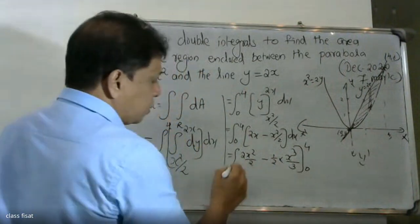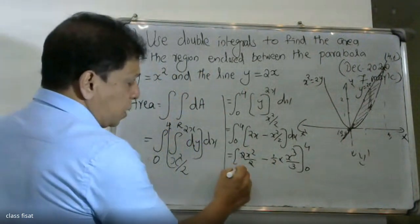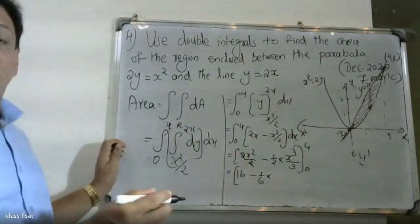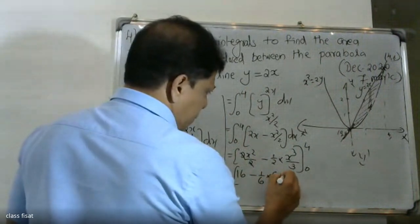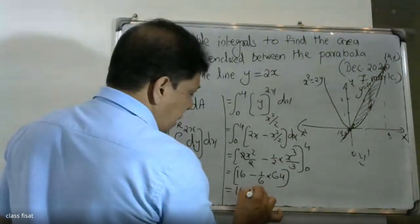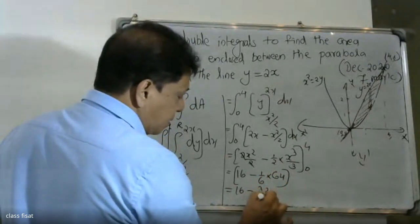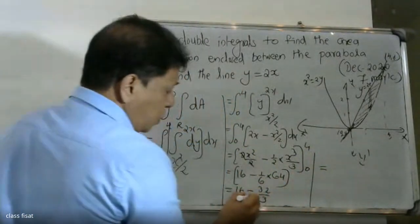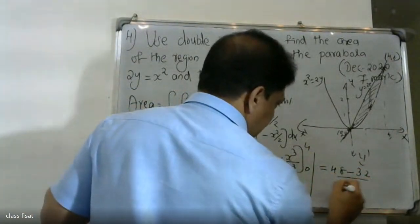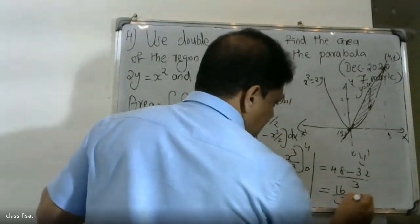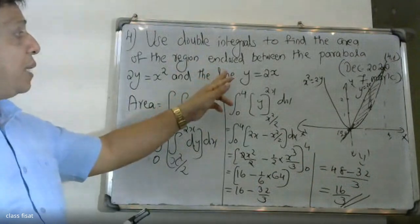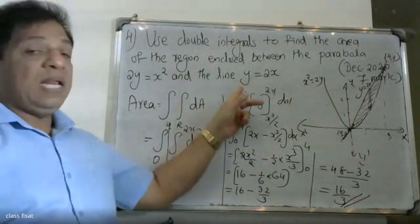Evaluating: we get 2x minus x²/2 integrated from 0 to 4. That gives x² minus x³/6 from 0 to 4. Substituting x = 4: 16 minus (1/6)(64) = 16 minus 64/6 = 16 minus 32/3. Cross multiplying: (48 minus 32) divided by 3 = 16/3. The area enclosed between the parabola and the line y = 2x is 16/3.